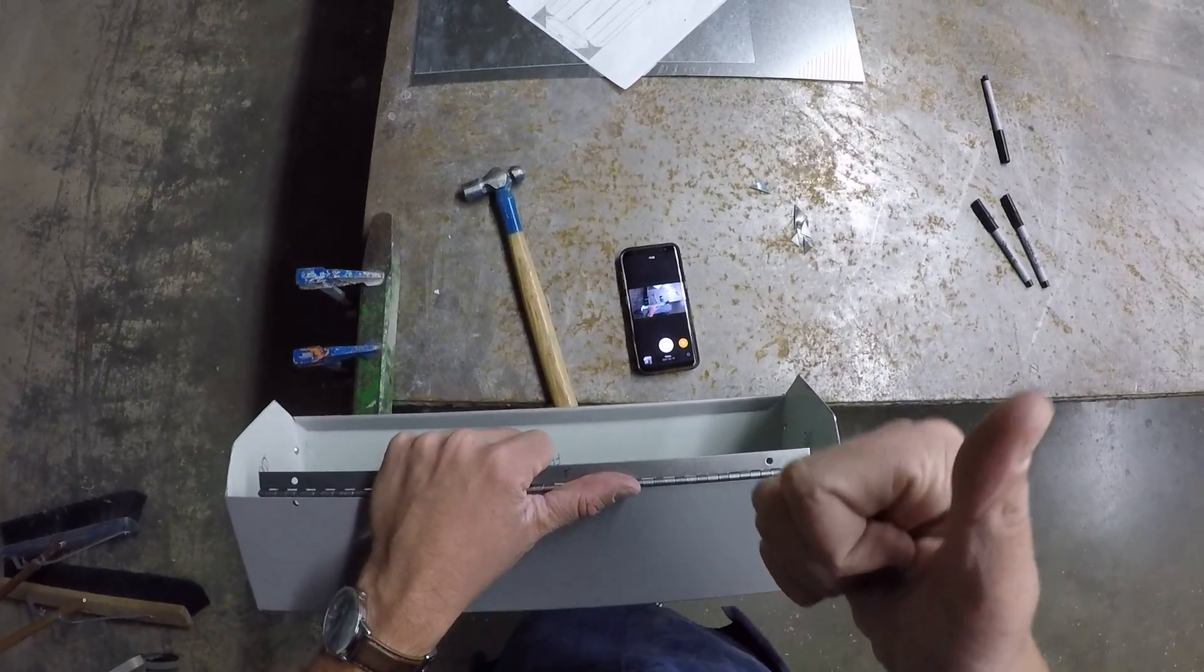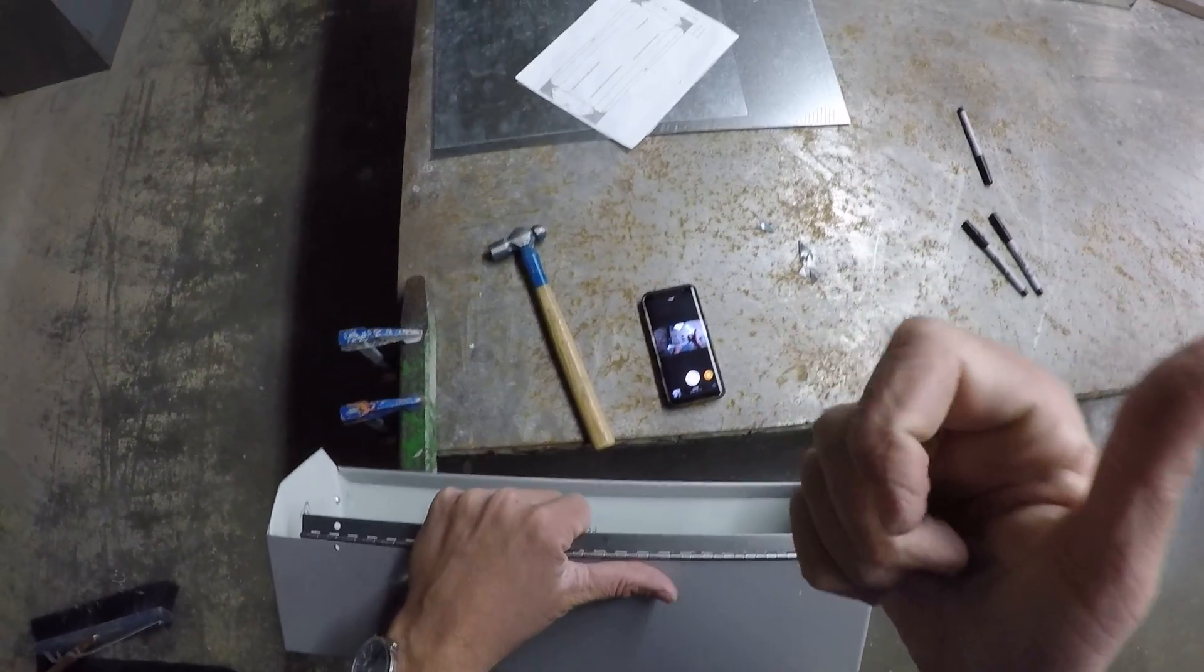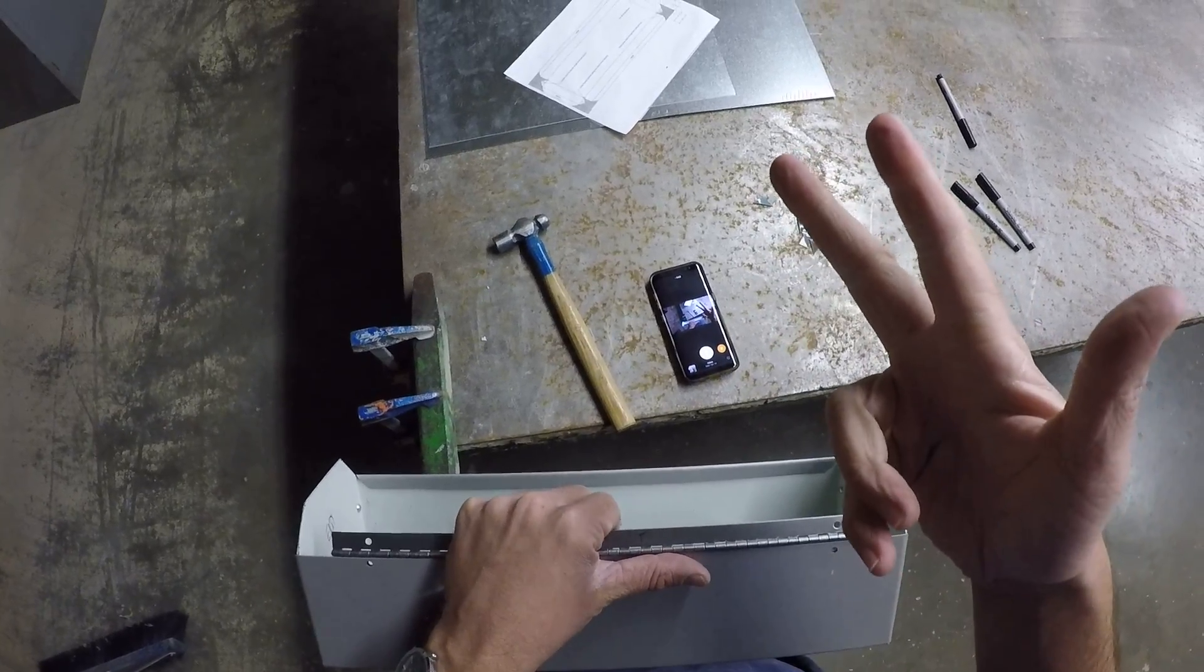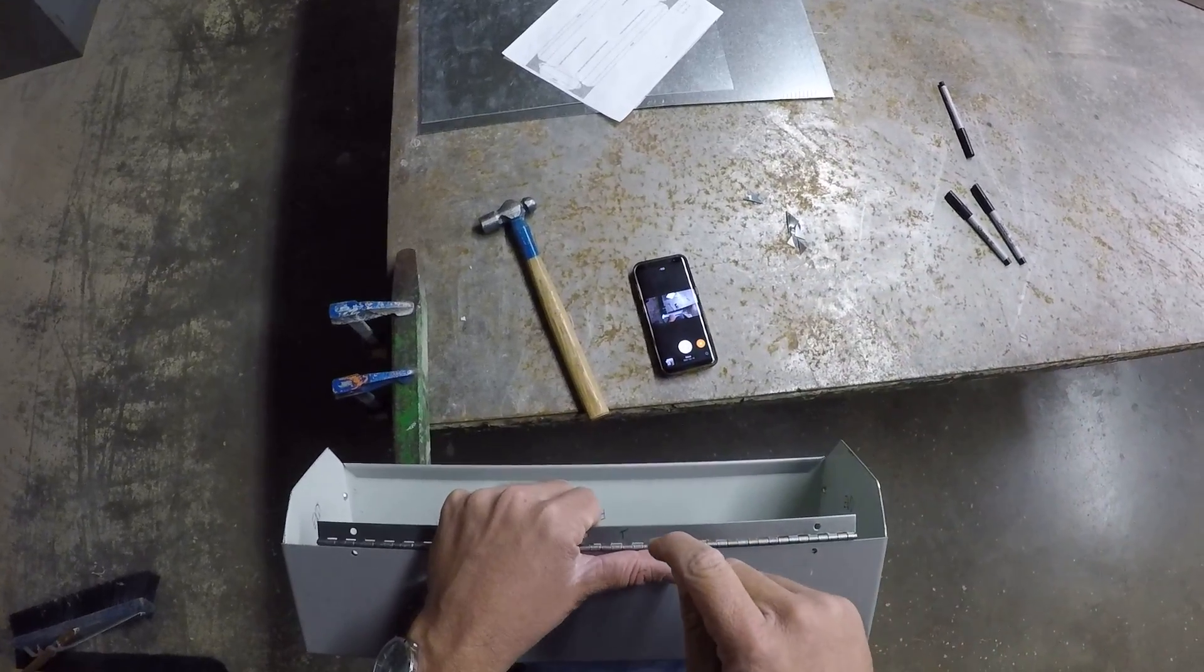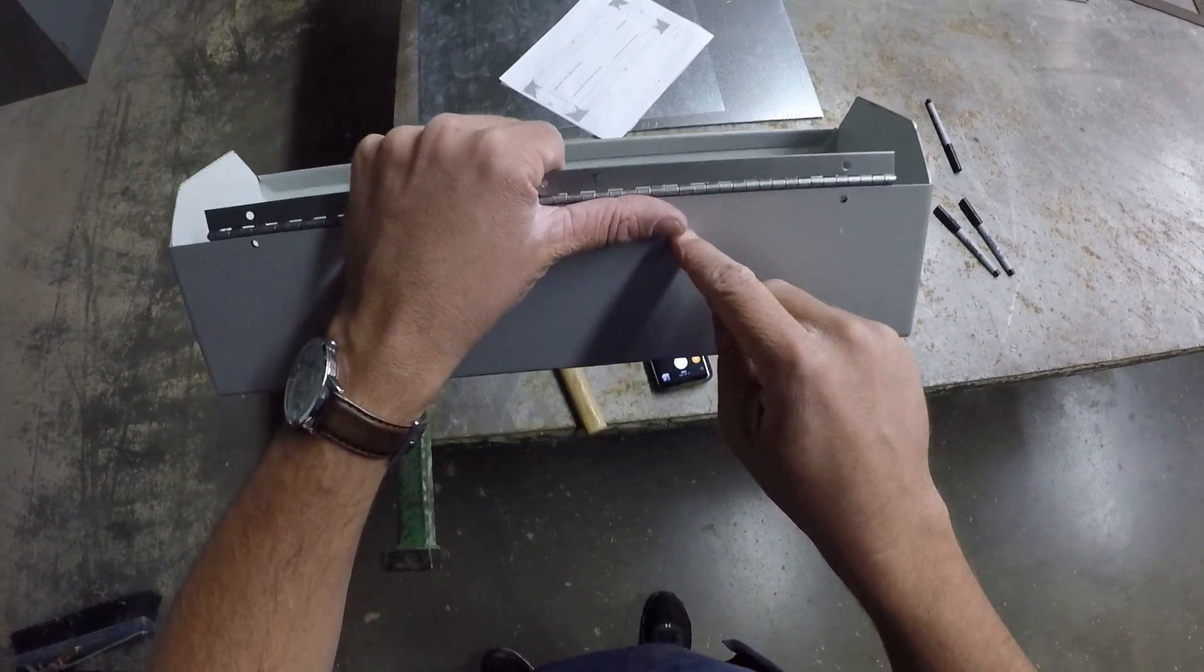All righty. So we have line up, we have hole punching, we have labeling, and then we have riveting to get our hinge attached to the bottom.